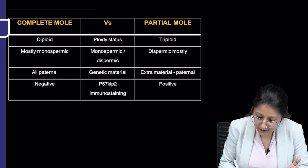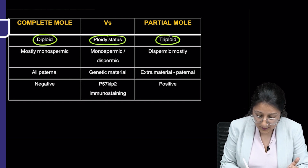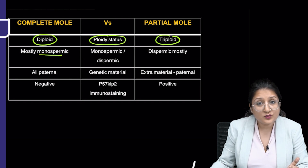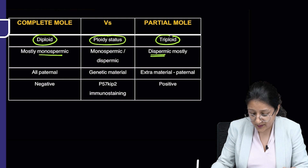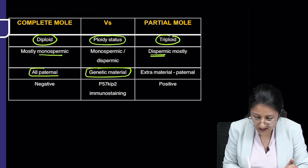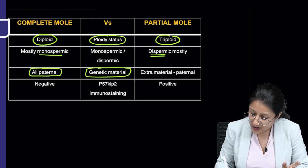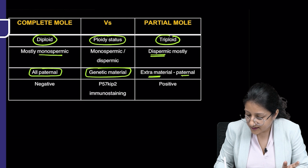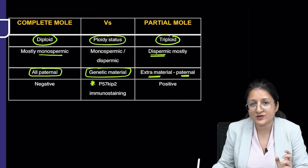Let us revise again the ploidy status. Complete moles are diploid whereas partial moles are triploid. Complete moles are mostly monospermic, though they could be diaspermic as well; partial moles are mostly diaspermic. The genetic material in a complete mole is entirely paternal — we are talking about the nuclear DNA material — and in the partial mole, the extra material is paternal. Now let us talk more about P57 KIP2 immunostaining.